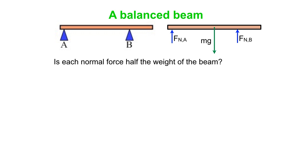So we're going to ask the question, answer the question, is each normal force half the weight of the beam? Let's find out. So if we just think about what we know about forces, we're pretty good at that. So we know the sum of all the forces equals Ma, but in this case there's no acceleration, so sum of all the forces has to be zero.